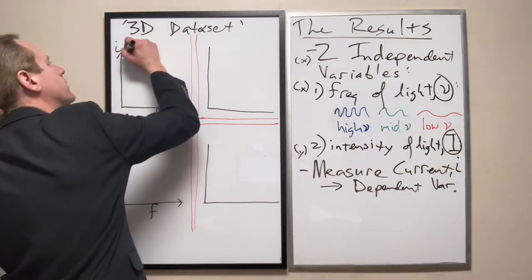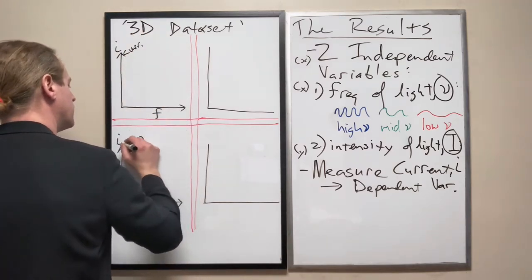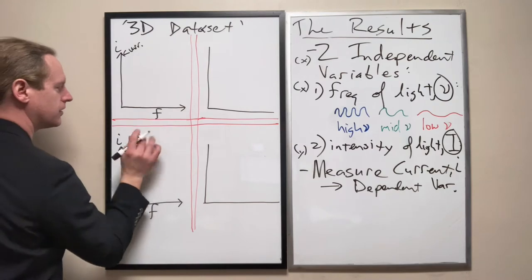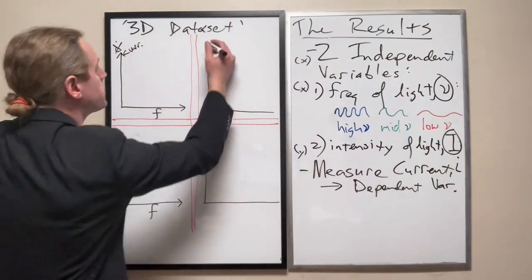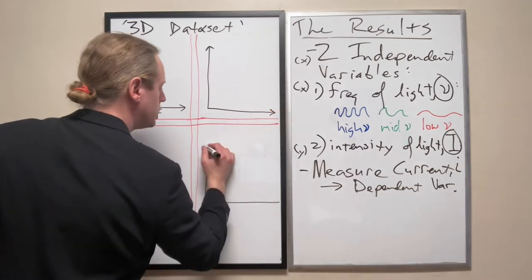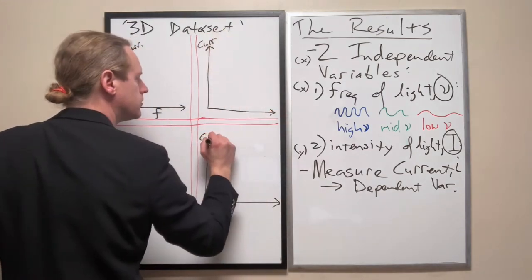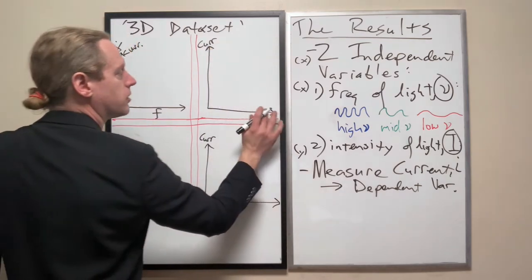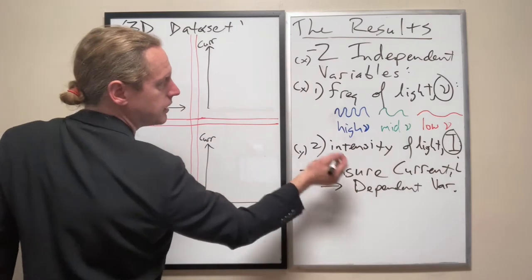So current versus frequency. And you know what? Screw it. Current. I like that better. Okay. Now for these two graphs, we're going to do the same thing, except instead of current versus frequency, it's going to be current versus the intensity.